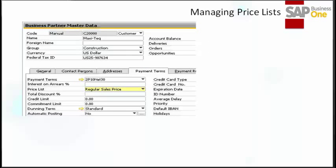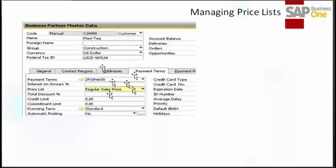This is the business partner master data. You can see here the price list that is default for this business partner. When you create a business partner, a price list is assigned to each one. A price list can default from the customer group or can be assigned via payment terms if no price list is assigned for the customer group. A business partner is assigned to only one price list. You can view and change the defaulted price list in the business partner master data.